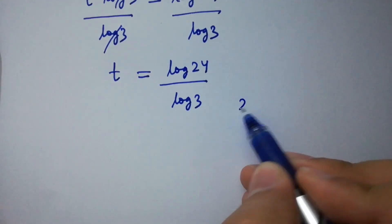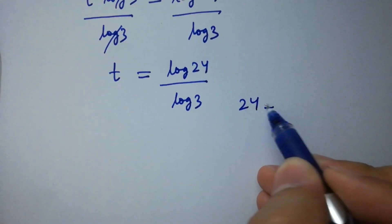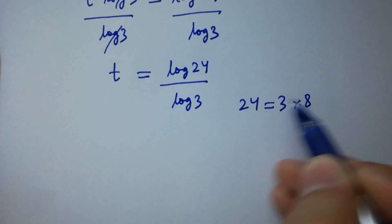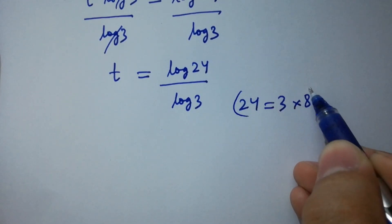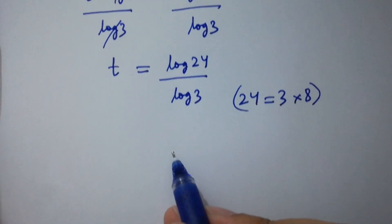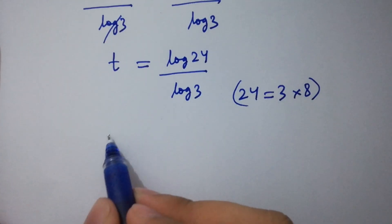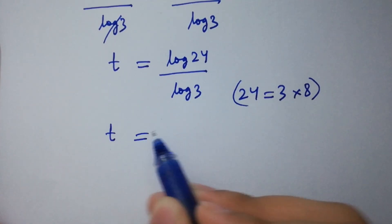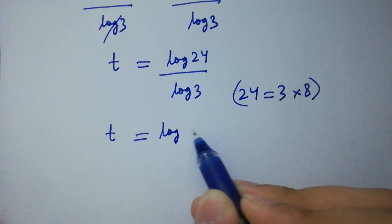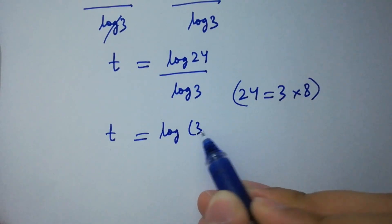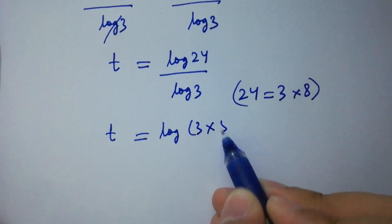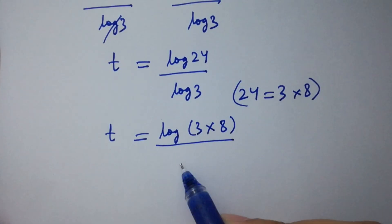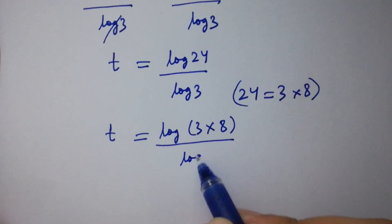Since 24 equals 3 times 8, t will be equal to log of 3 times 8 over log 3.